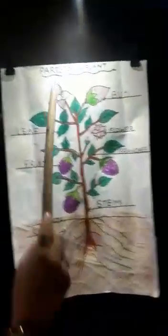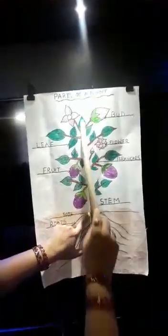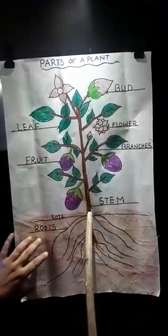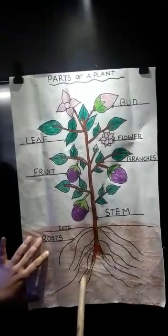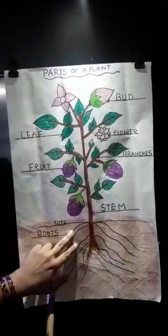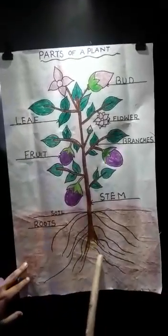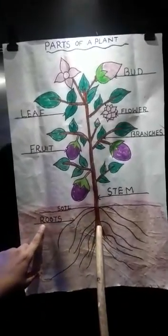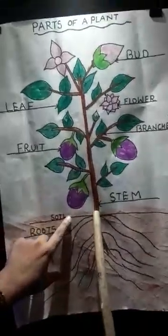Now just concentrate on the figure or picture of the plant. You can see this picture of a plant. Here is the soil — the portion of the plant which is above the soil is known as the shoot system, and the part of the plant which is beneath or below the soil is known as the root system.